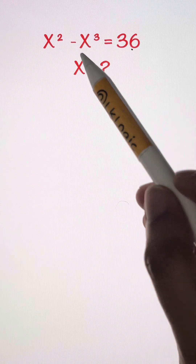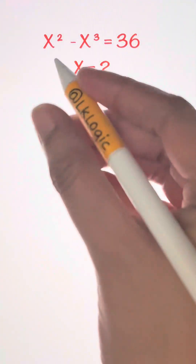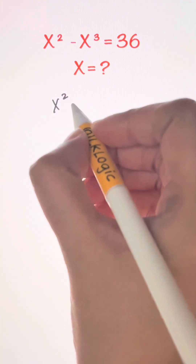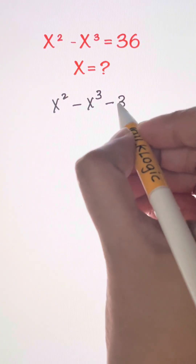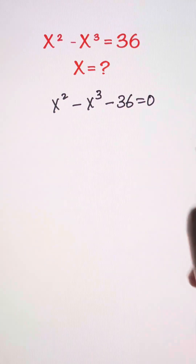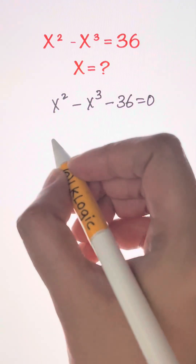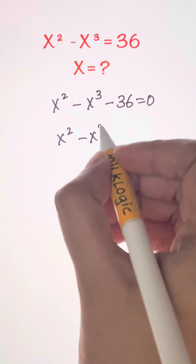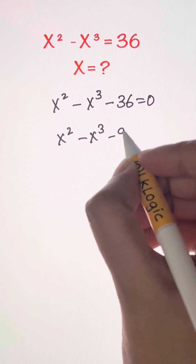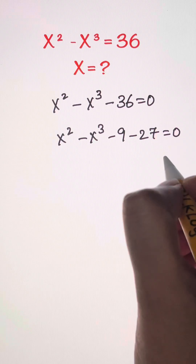Let's bring the right hand side terms to the left hand side. So x squared minus x cubed minus 36 is equal to 0. I'm going to split this 36: x squared minus x cubed, negative 9, negative 27 equals 0.